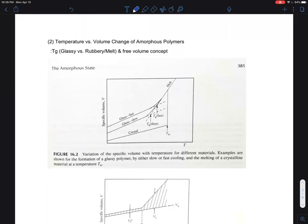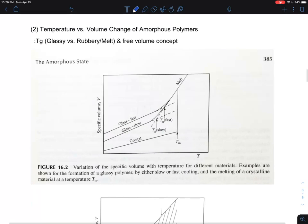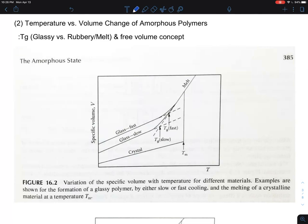This is section 2 on amorphous polymers and understanding glass transition temperature. I'll blow up the figure in the textbook and guide you through this important figure. The x-axis is temperature and the y-axis is specific volume, such as volume per mass. This experiment was done in the melted state where they have a very reproducible volume.